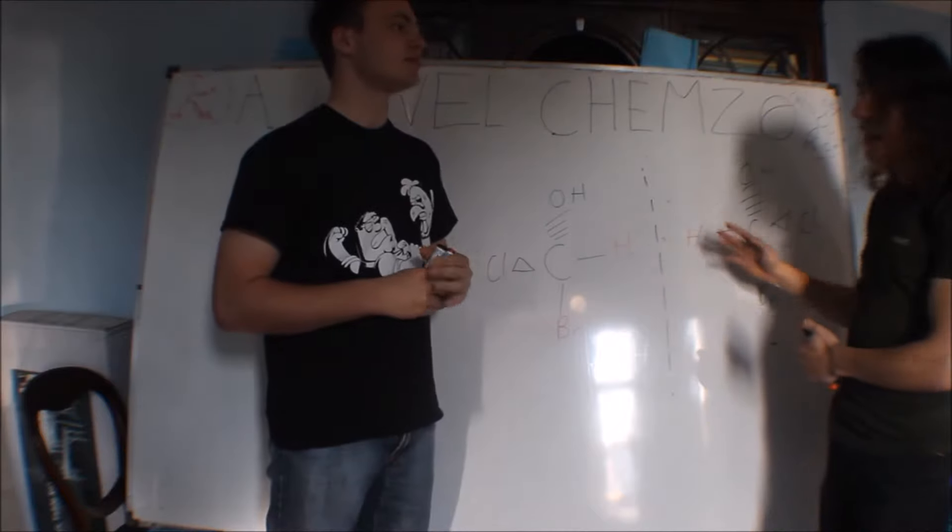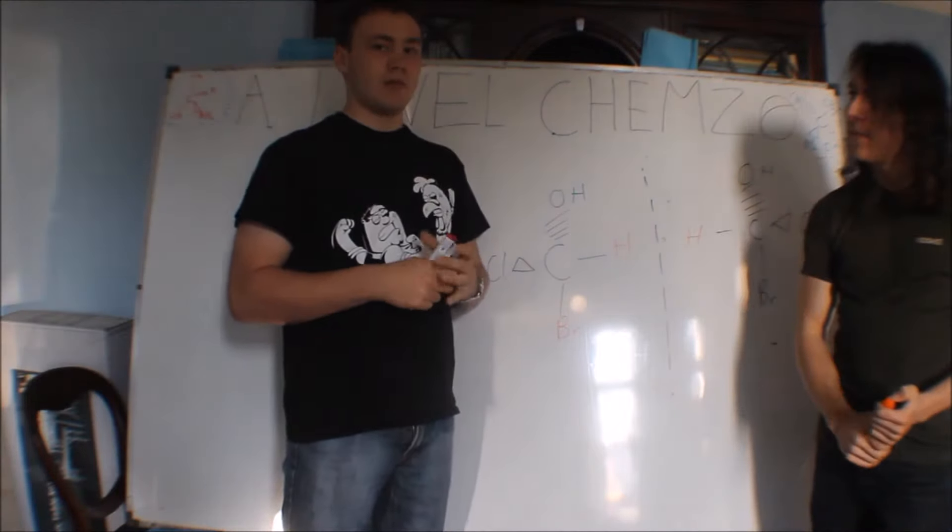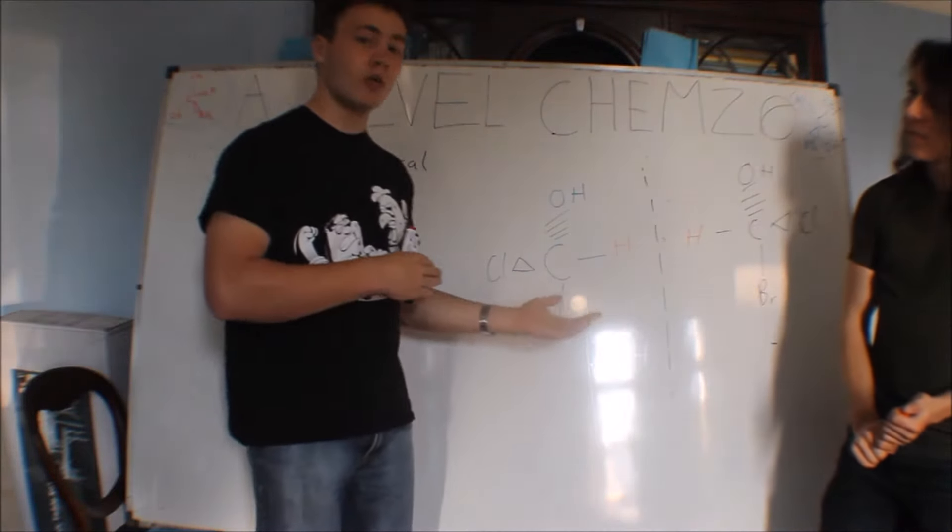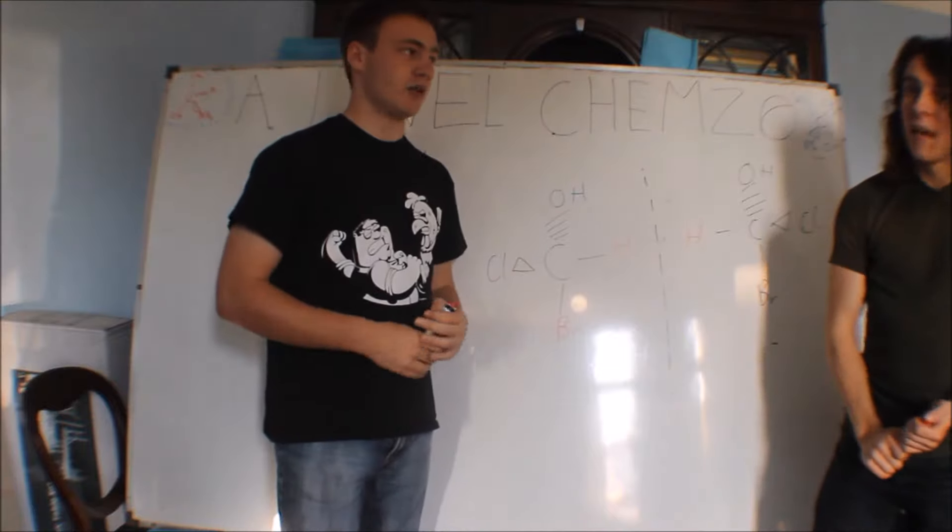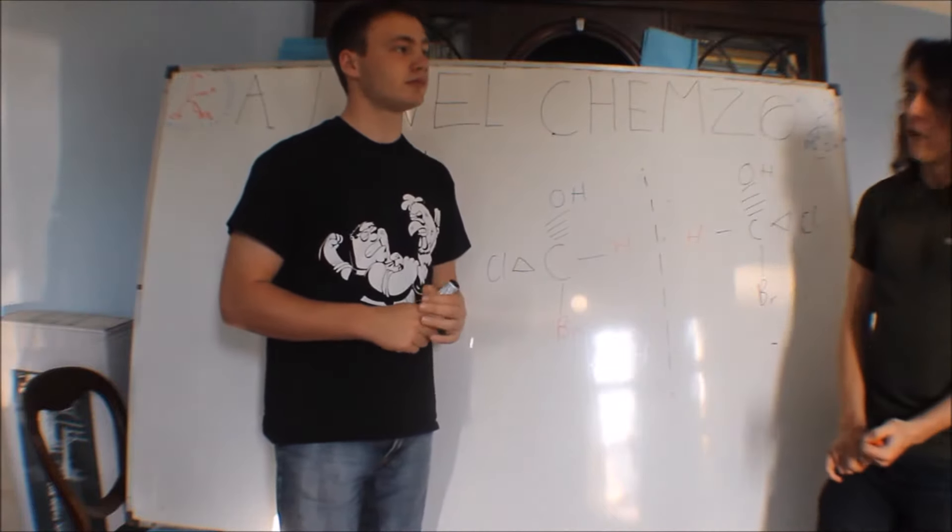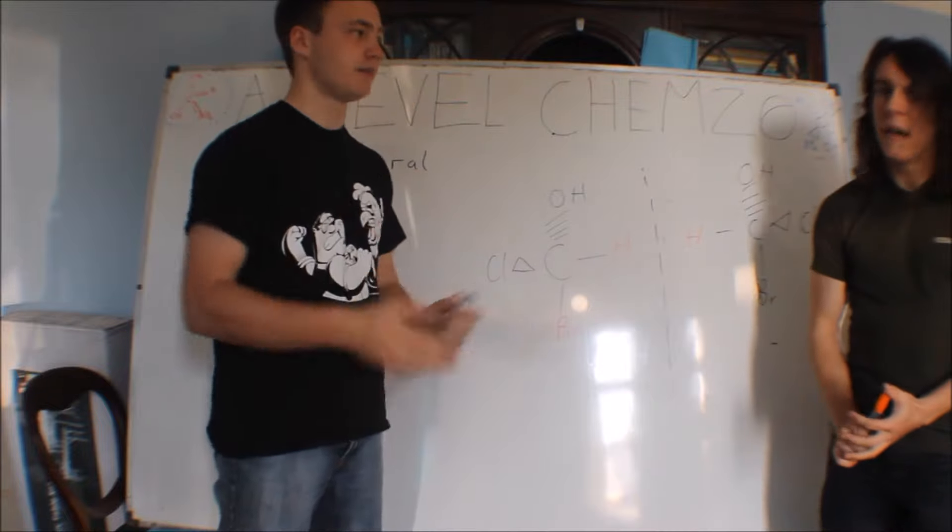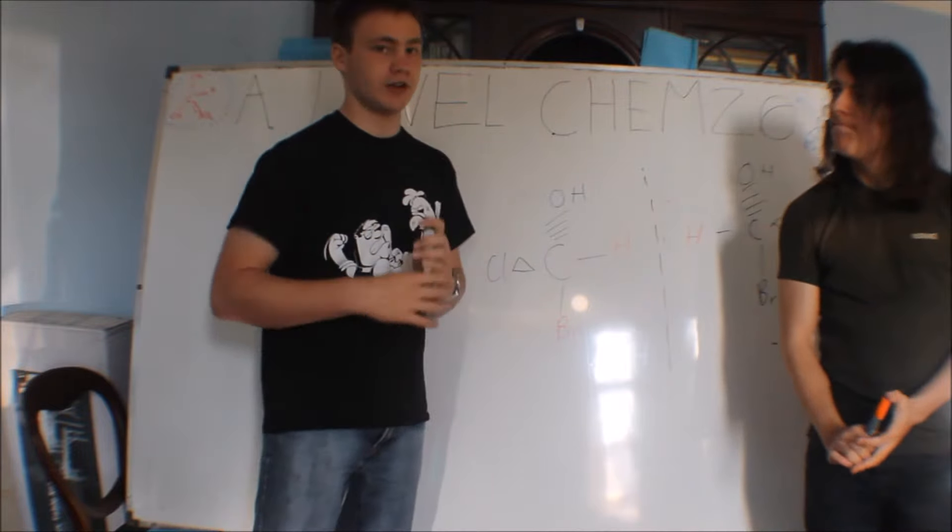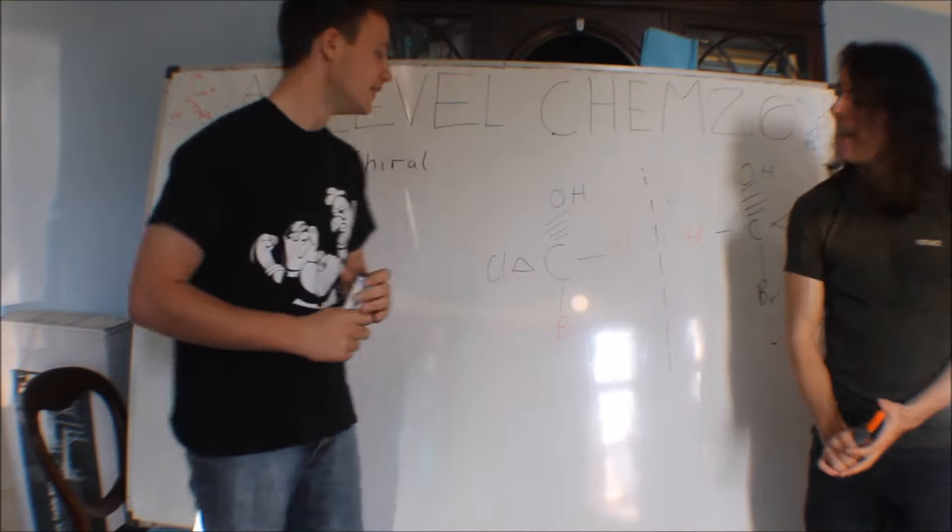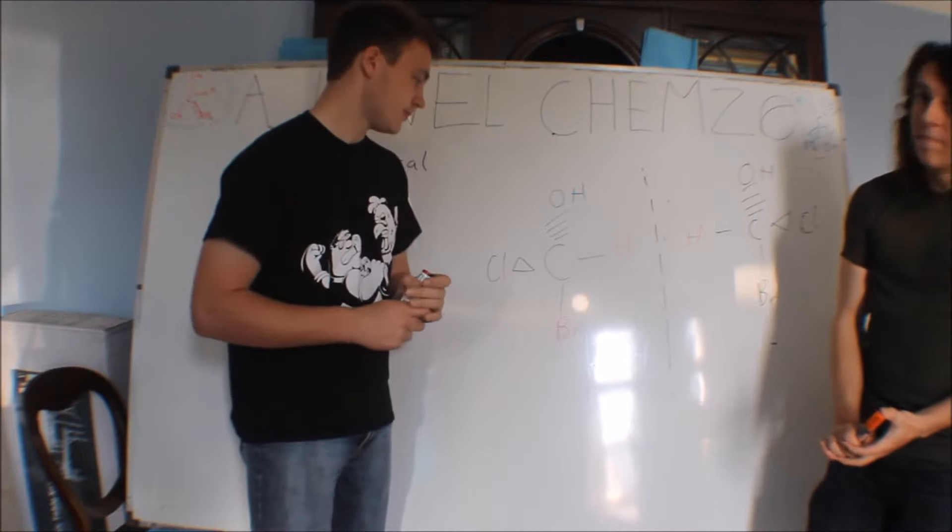And the only difference between them really is the way they polarize light. One would polarize it clockwise. One would polarize it anti-clockwise. But if they were both there, they'd cancel each other out. So you could see something clear. And that's called a racemic mixture. Very good words coming out of me today. One more thing to mention.